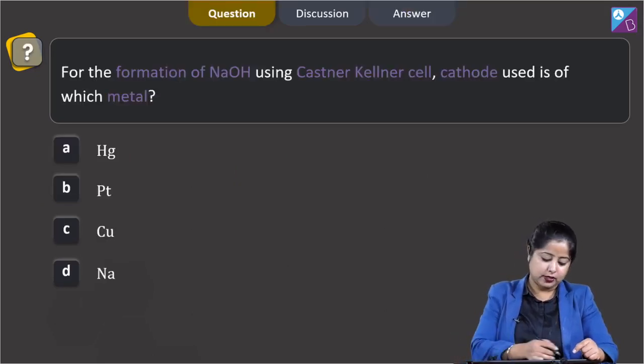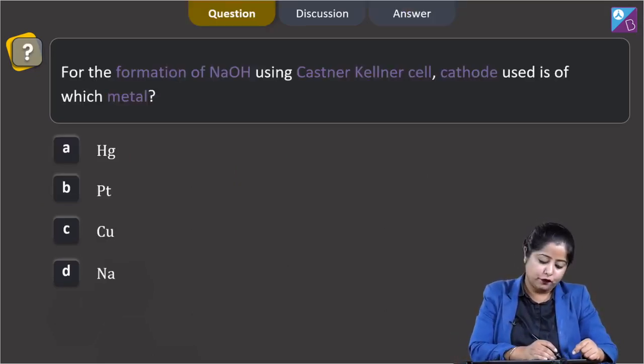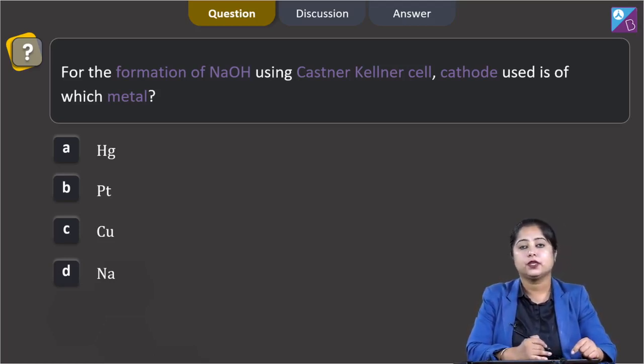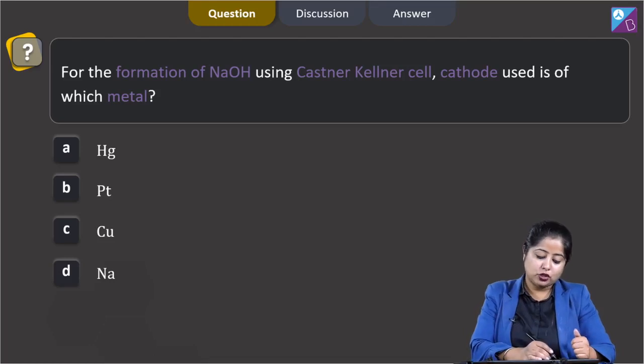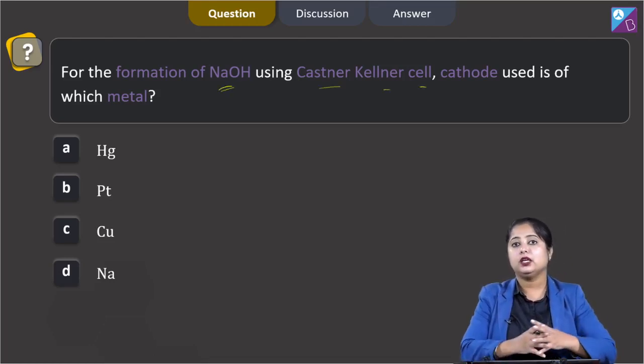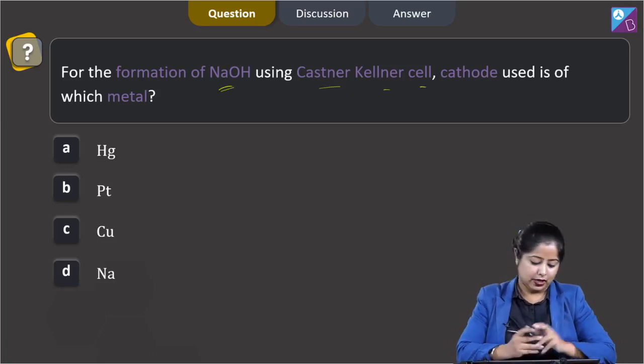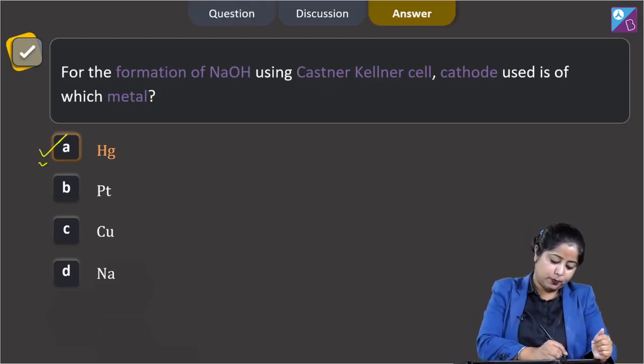Moving to the next question. For the formation of NaOH using Kastner Kellner cell, cathode used is of which metal? The options are mercury, platinum, copper, and sodium. For the formation of NaOH using Kastner Kellner cell, mercury cathode is used because sodium metal is obtained as sodium amalgam. The correct answer is option A.